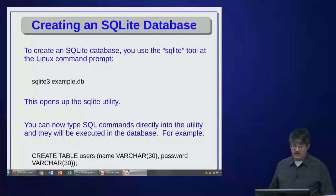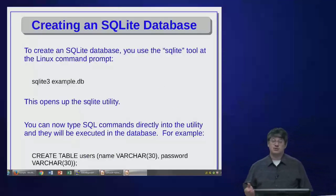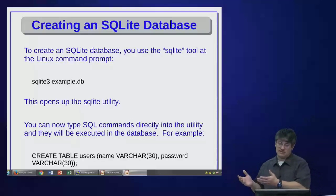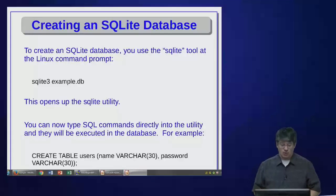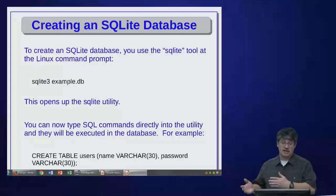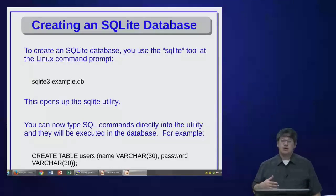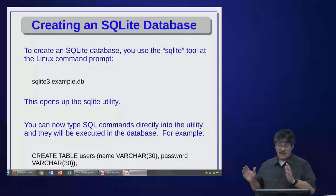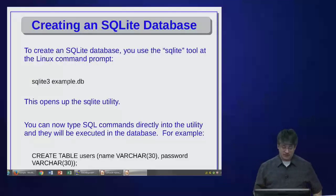So how do we use SQLite? SQLite comes with a utility called sqlite3 — we're now on version 3. You can create a database by running sqlite3 followed by the name of your database file; it's good style to name it with a .db extension. So here I'm creating a database named example.db. This pulls up the SQLite utility where we can run SQL commands. For example, I can type 'CREATE TABLE users' with a name field and a password field, both strings of length 30.